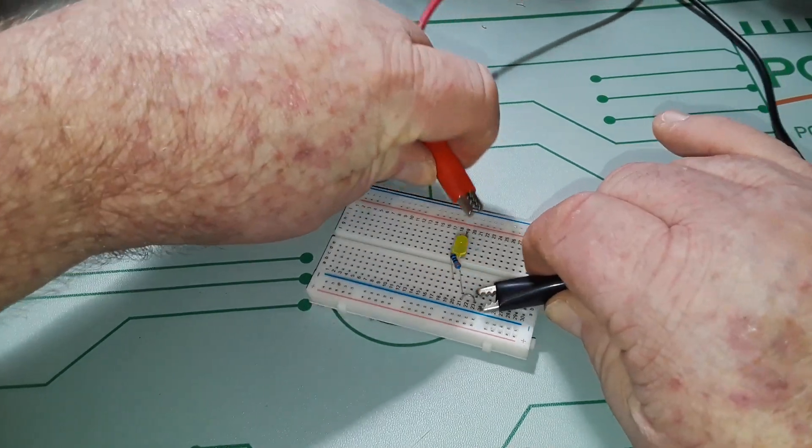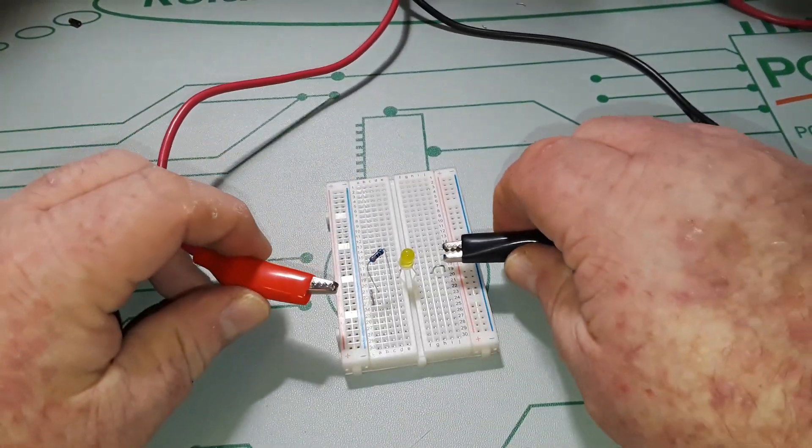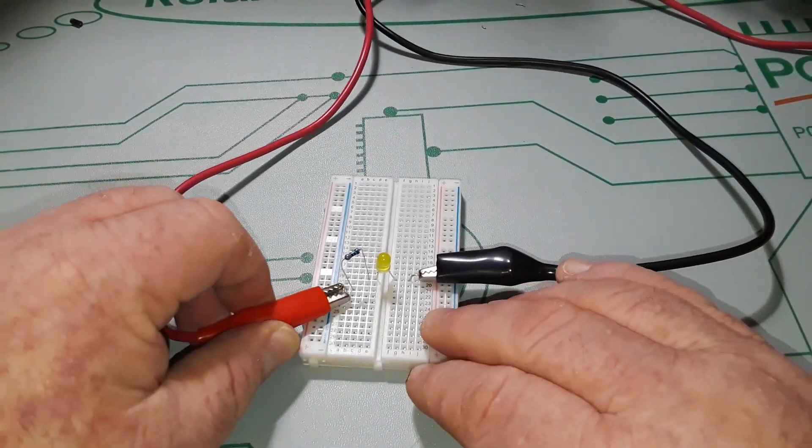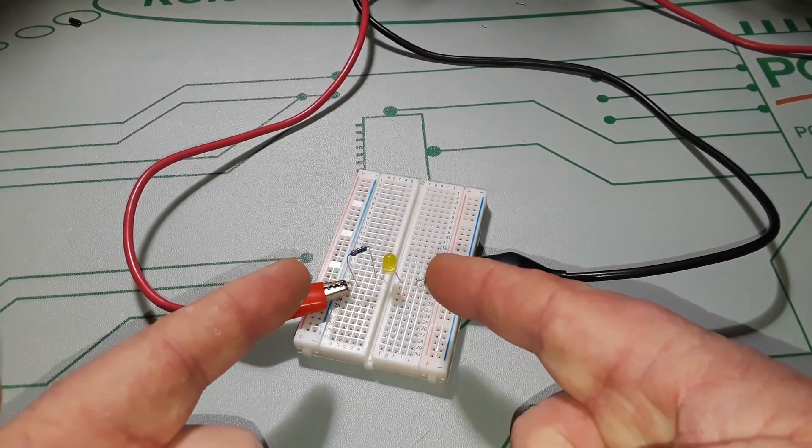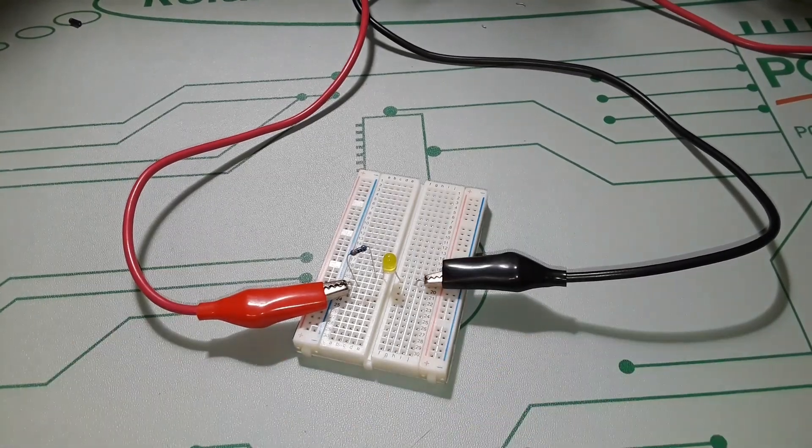But if we reverse it, we get nothing. Because of course, the diode is a one-way valve. And you can take a look here at the power supply. You can see nothing's happening.